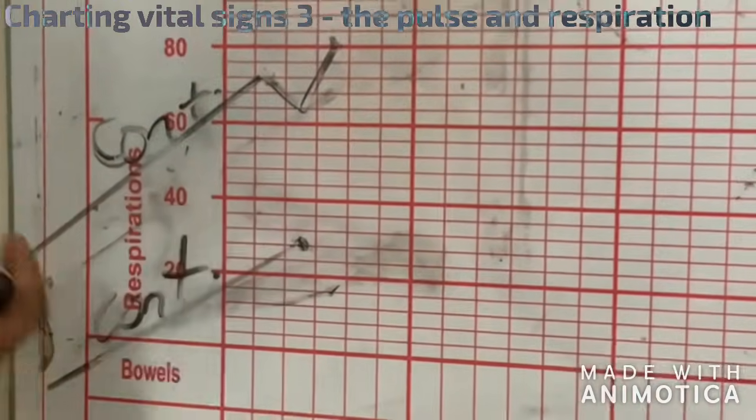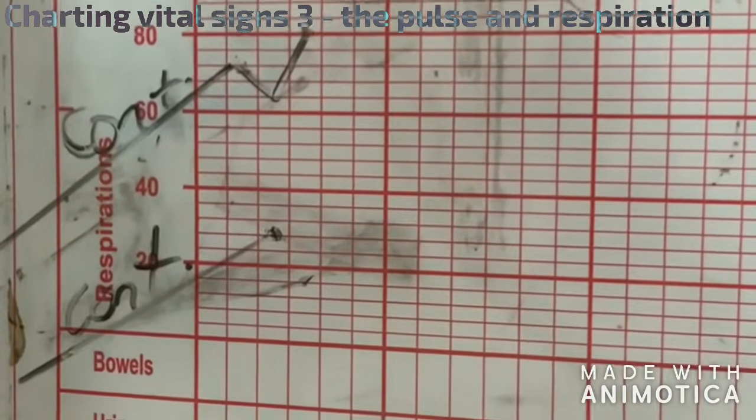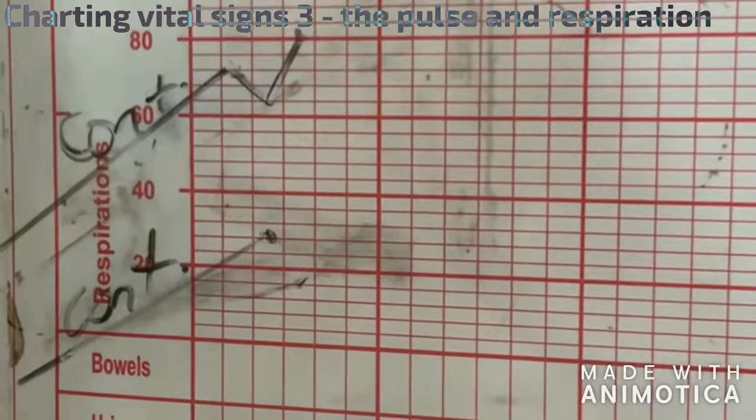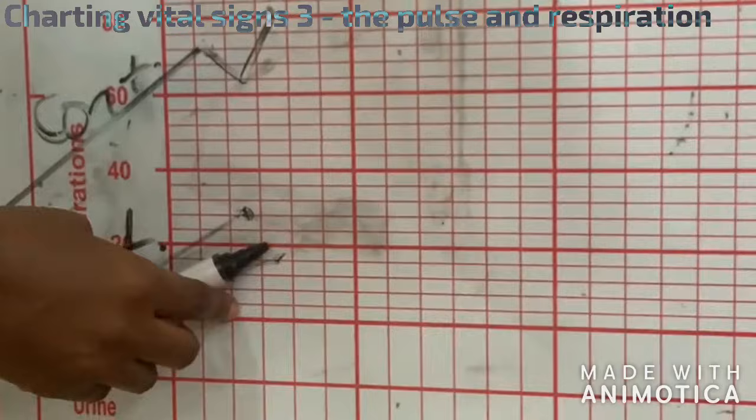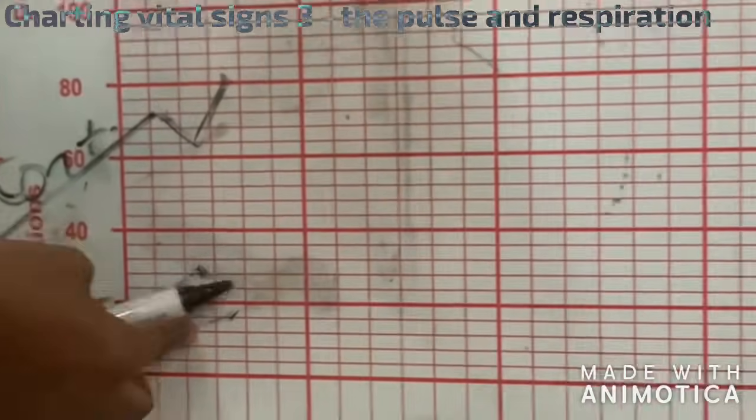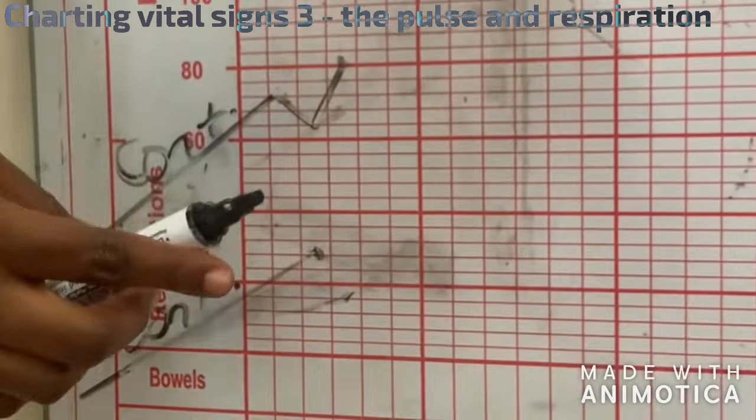Then, let's say the respiration is 30. You don't have 30 on it because the next two hours, this is 20, 24, 28, 32. There's no 30.